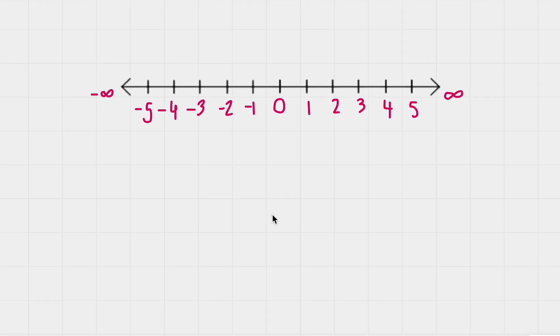Here is an example of what a number line looks like. In the center, we have zero. To the left of zero are all the negative values all the way to negative infinity. To the right of zero, we have all the positive values going all the way to positive infinity.